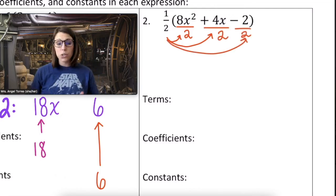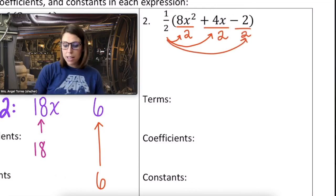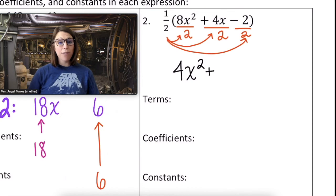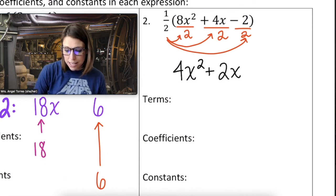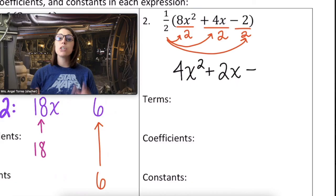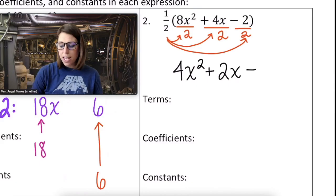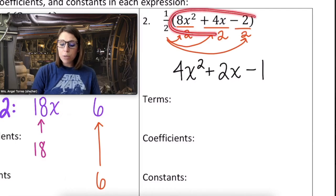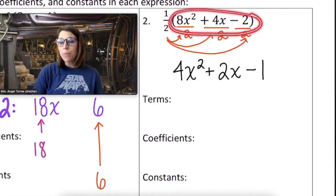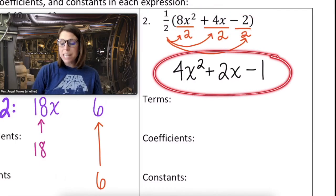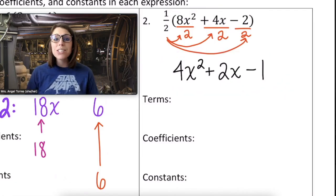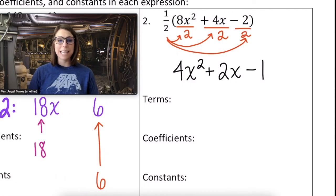8x squared divided by 2, that would be 4x squared, plus 4x divided by 2 would be 2x, minus 2 divided by 2 is 1. Notice how there were three terms inside the group to start, and there are three terms outside of the group after applying the distributive property, which means our structure was maintained.